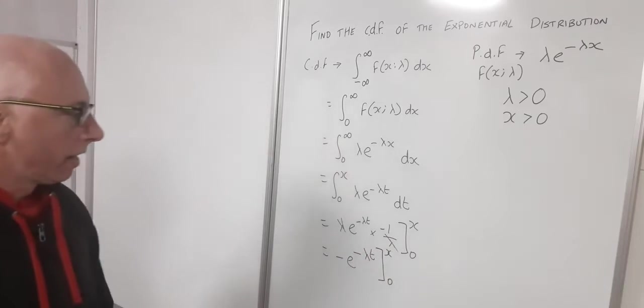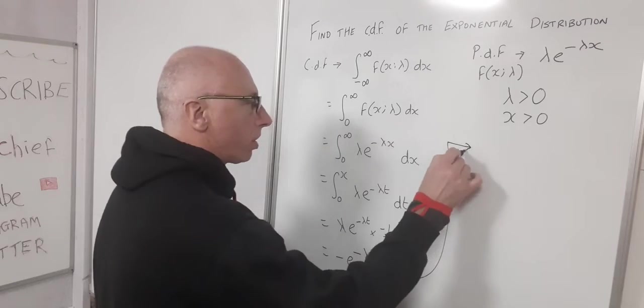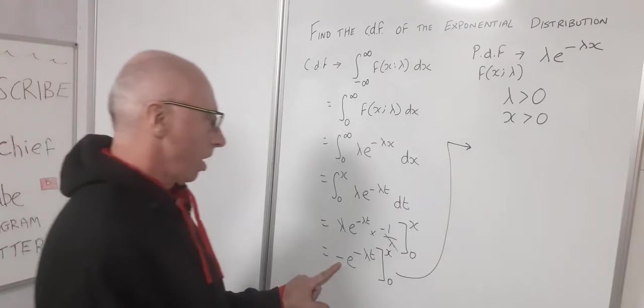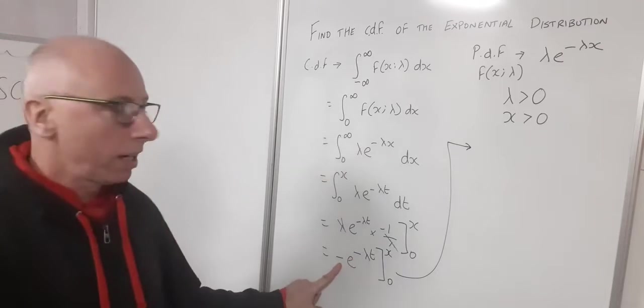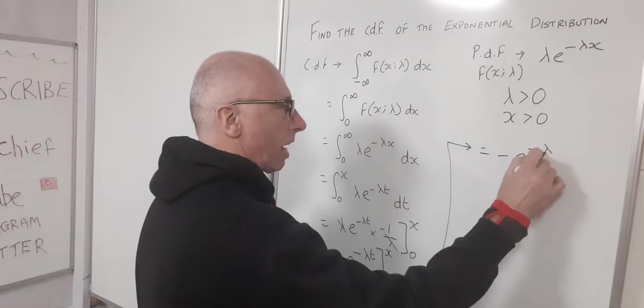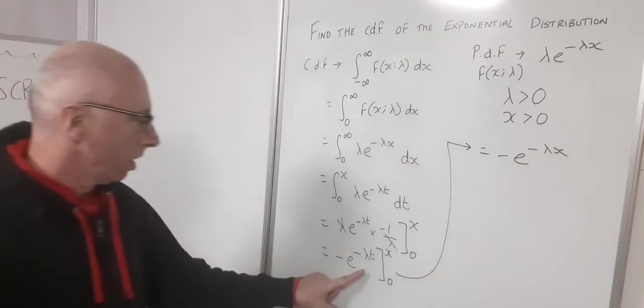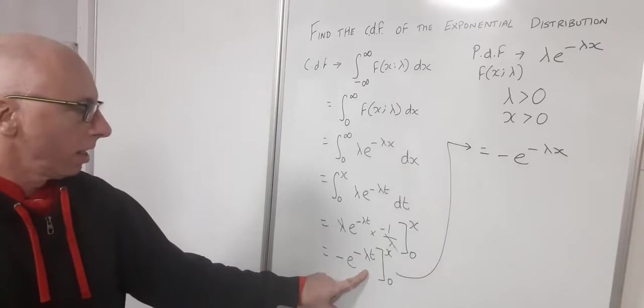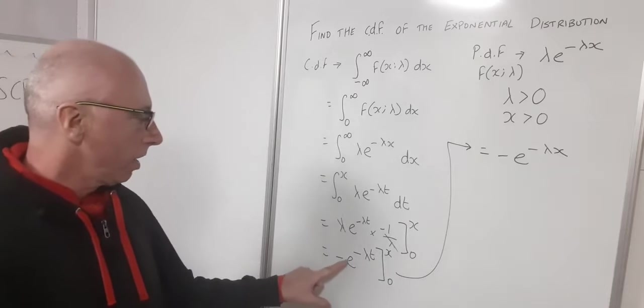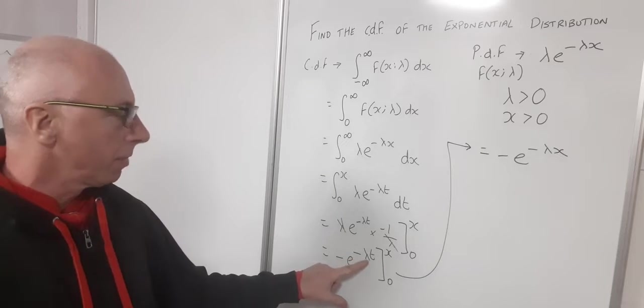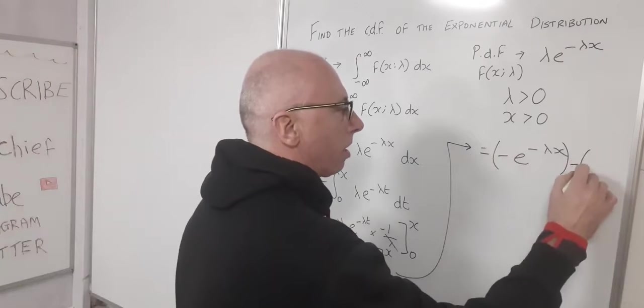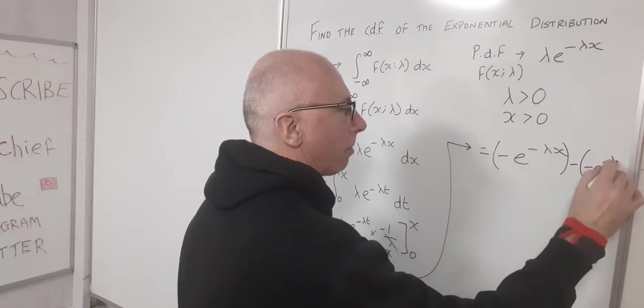Okay, so now let's put this over here, our result. So let's plug in x first. Wherever we see a t, we plug in an x. So then we get minus e to the minus lambda x. So that's our first bit. And then we subtract when t is zero, which is minus e to the minus lambda zero. So that bit there, minus minus e to the minus lambda zero.